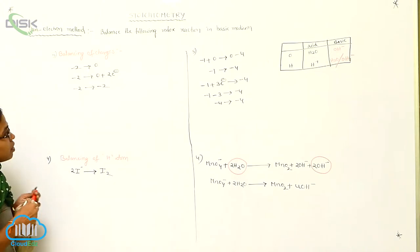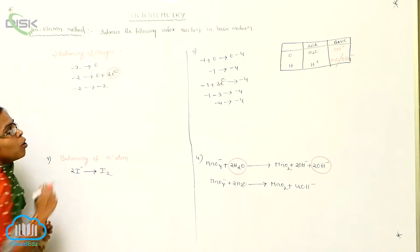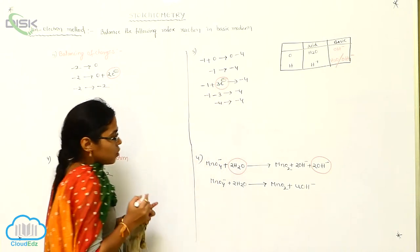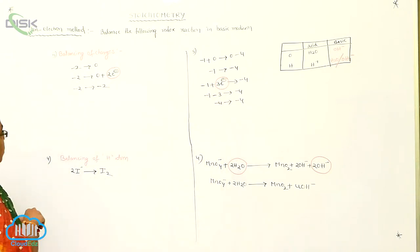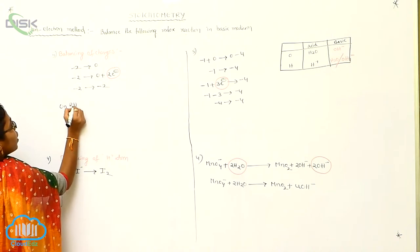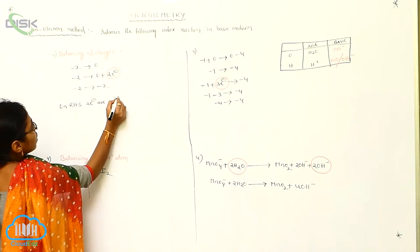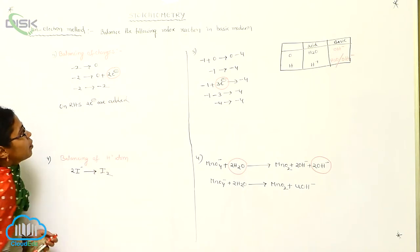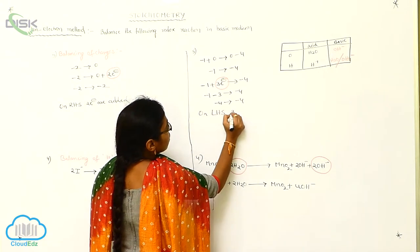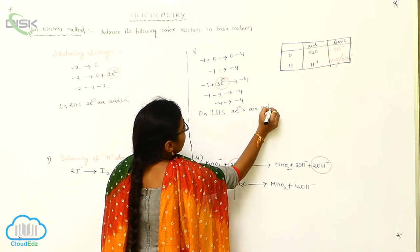So for the balancing of charges: on the right-hand side of the oxidation half-reaction, how many electrons are added? Two electrons. On the left-hand side of the reduction half-reaction, how many electrons are added? Three electrons.